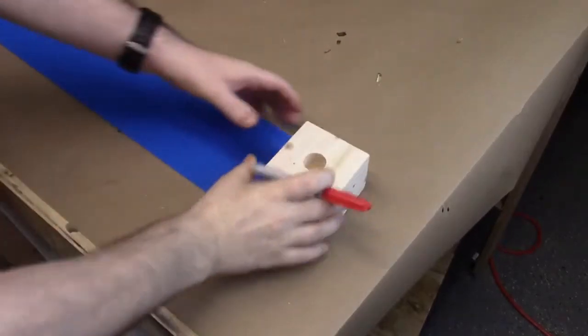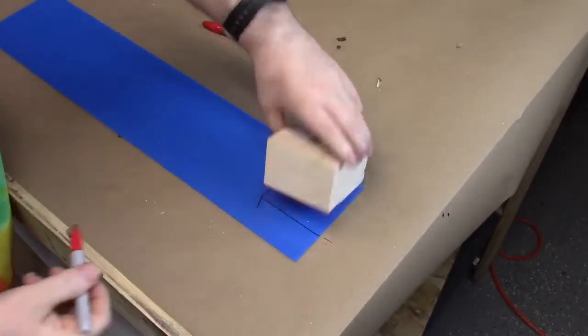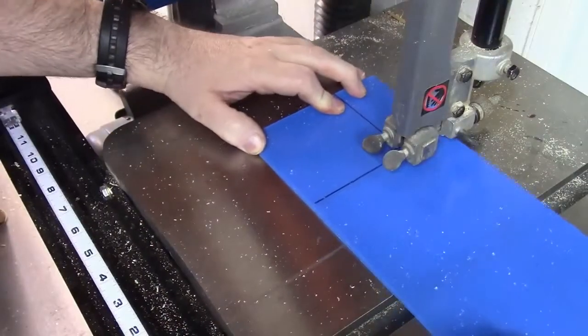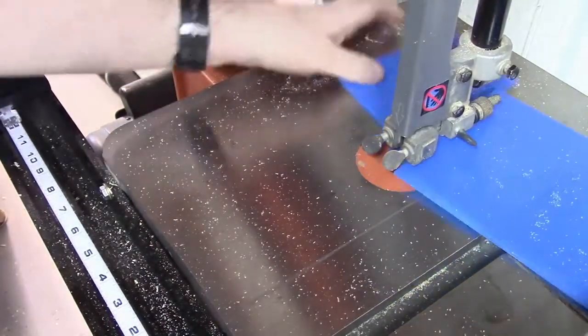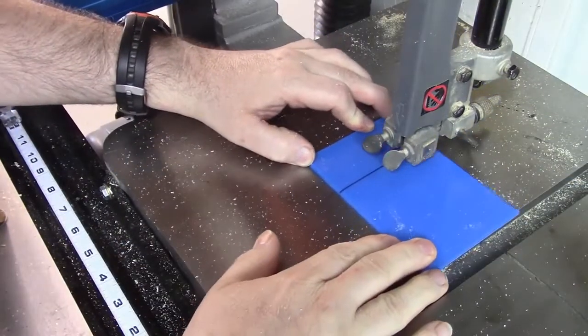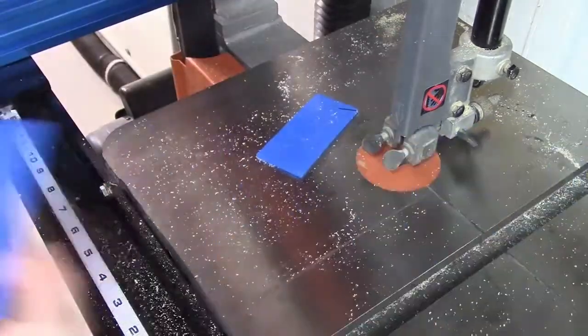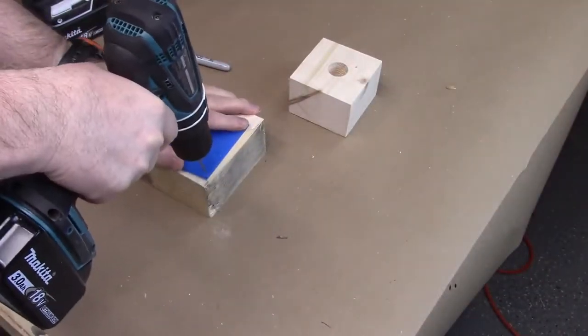Now let's get out a nice thin piece of Plexi and mark it off so I can make a little top for this. Let's drill out some pilot holes.